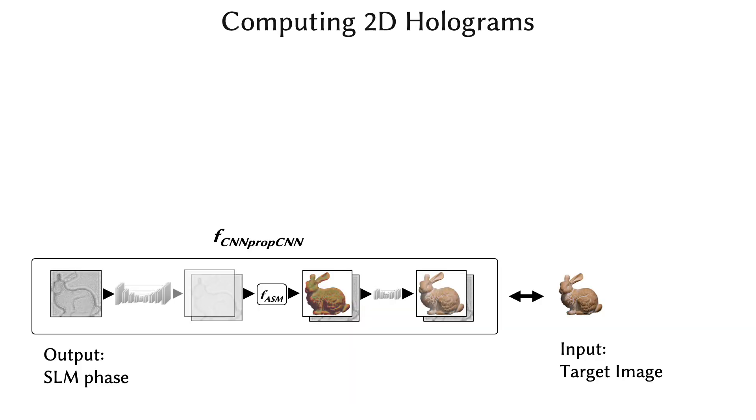When computing 2D holograms with our pre-trained model, we use stochastic gradient descent solvers to minimize the difference between the target image and the model output predicted for an SLM phase pattern.